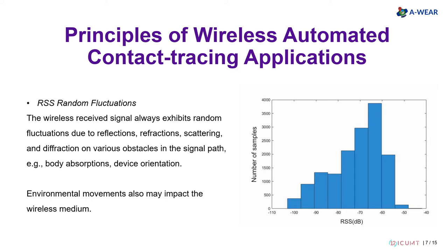Such random fluctuations are especially crucial for distance estimates. A user at a far distance outside the typical infectious range can be easily mistaken for a user at a nearby distance inside the typical infectious range of 2 meters. This creates a threat of false positives and false negatives due to random signal fluctuations, even when the rest of the contact tracing chain is functioning perfectly well.